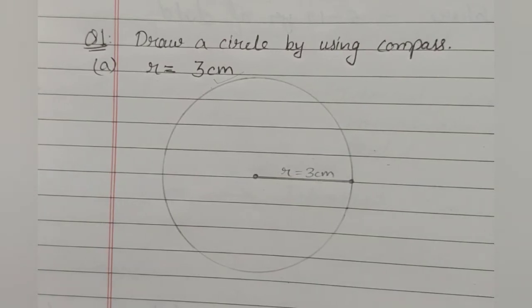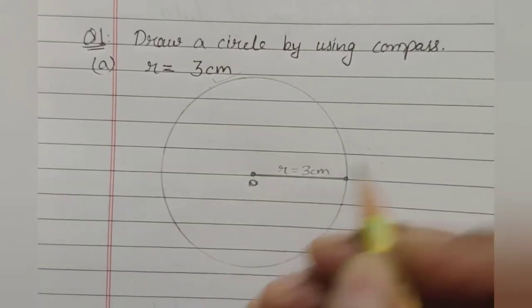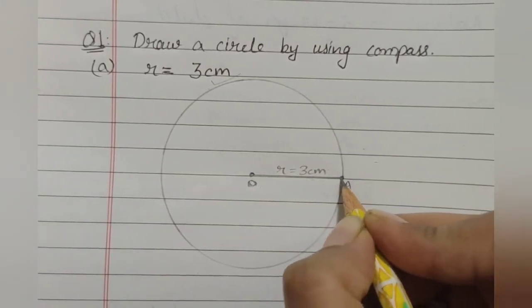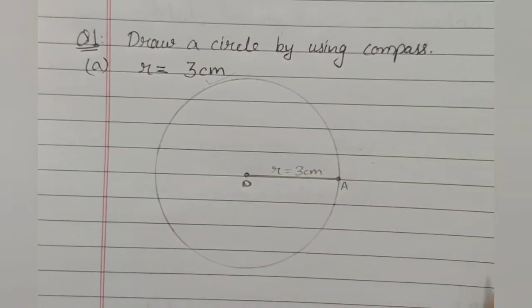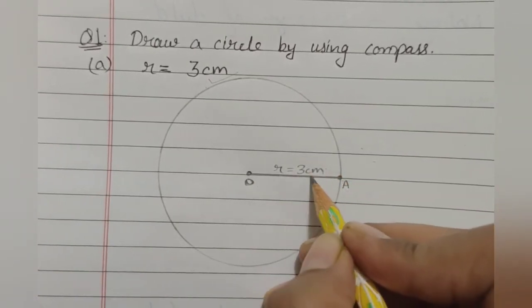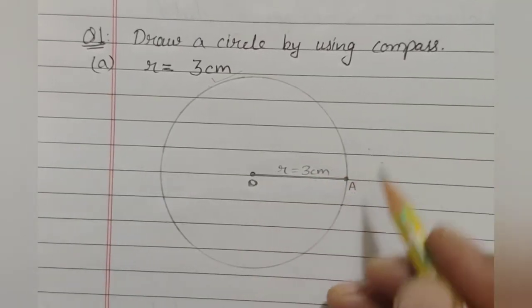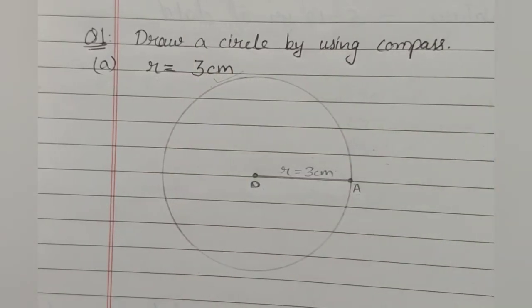And then, this part will become the center of the circle. You may say O and this part will be, this point will be at the circumference of a circle and we will call it A. So, OA is the radius of circle that is of 3 cm and this is how you will use this compass to make a circle. Clear?